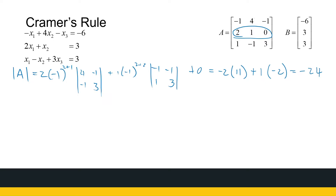That's the determinant of my coefficient matrix A, which is non-zero, so I can use Cramer's Rule. I'm not going to calculate x1, x2, and x3 — I'm just going to pick one of them. I'm going to pick x3.